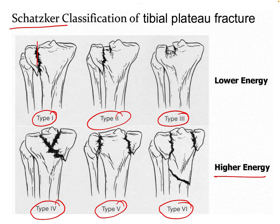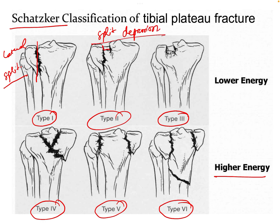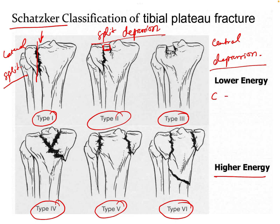In Type 1 there is a simple split fracture of the lateral condyle. In Type 2 there is a split as well as depression of the lateral tibial condyle — the articular surface is depressed, whereas in Type 1 it is only a split. In Type 3 there is no split, only central depression. To remember this, we use the mnemonic: C is the third letter of the alphabet, corresponding to Type 3 — central depression.